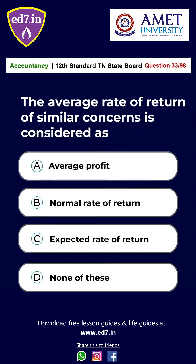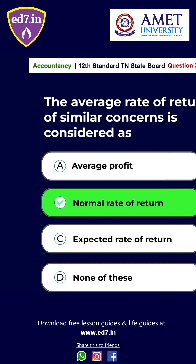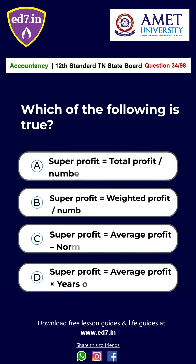Question No. 33: The average rate of return of a similar concern is considered as — Option A: Average profit. Option B: Normal rate of return. Option C: Expected rate of return. Option D: None of these. The answer is Option B — Normal rate of return.